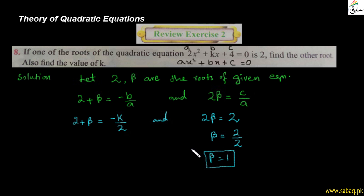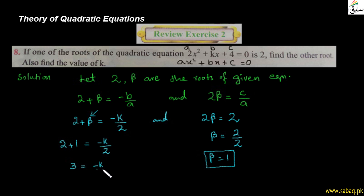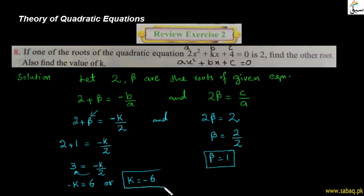β = 1 کو sum والے formula میں put کریں: 2 + 1 = −k/2، یعنی 3 = −k/2۔ دونوں طرف 2 multiply کریں تو −k = 6، یعنی k = −6۔